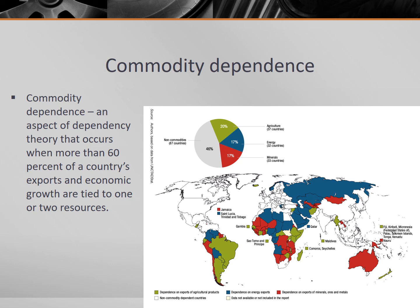Our final examination is a specific aspect of dependency theory known as commodity dependence. Commodities are raw materials that are processed into finished goods — things like oil and timber, coffee or cotton. So, commodity dependence occurs when more than 60% of a country's exports and economic growth are tied to one or two resources. When a country is overly dependent on commodity exports for income, they're considered commodity dependent.